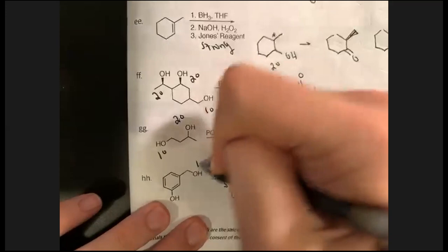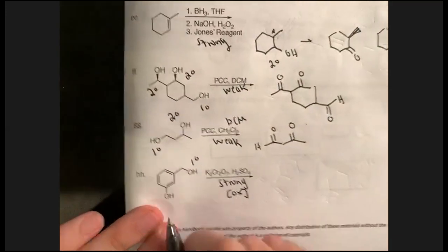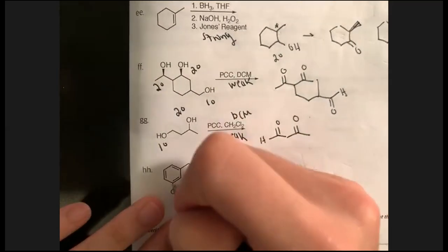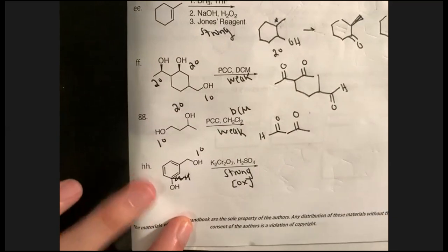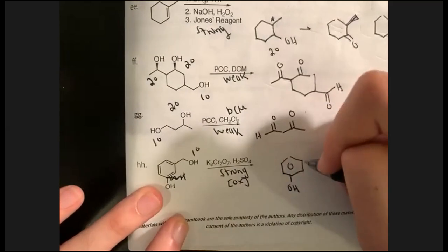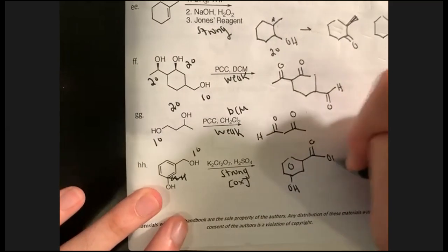For letter HH: strong oxidation. Anytime you see oxygen in these reagents, that's a strong oxidant. The primary alcohol gets oxidized to a carboxylic acid. But the benzylic phenol-type carbon has no protons attached — so there are no available C-H bonds to oxidize. That position stays as is. Only the primary gets oxidized to the carboxylic acid.